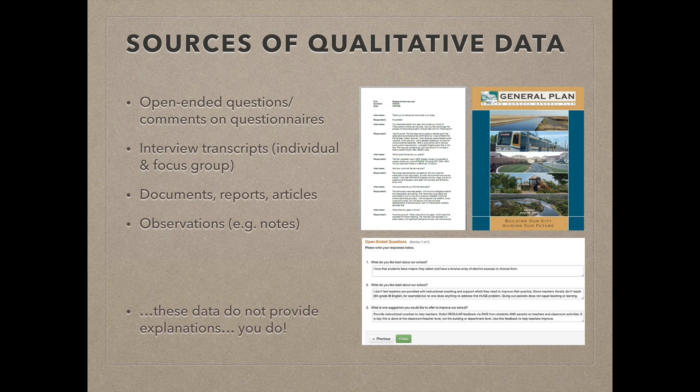The qualitative data you will use for your research can come from a wide range of sources. It might include open-ended responses and comments on survey questionnaires, or it could be from interview or focus group transcripts. Qualitative data also includes any documents or reports you include as part of your research, or even notes you take as part of observational research.